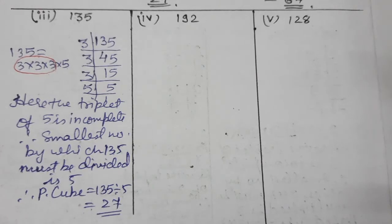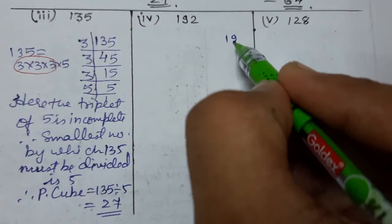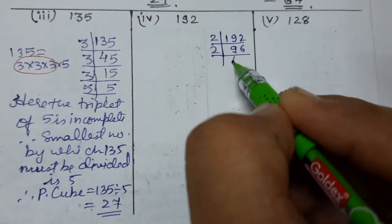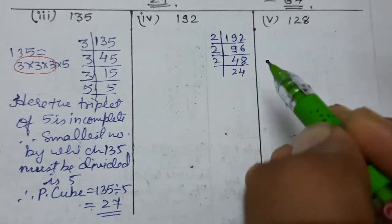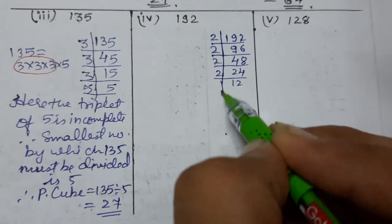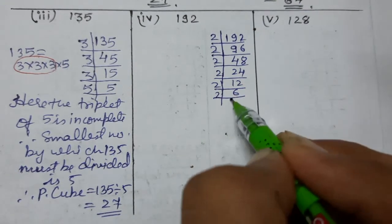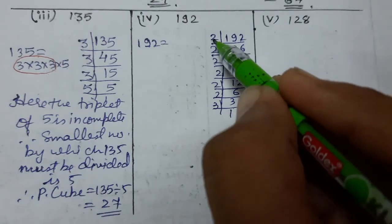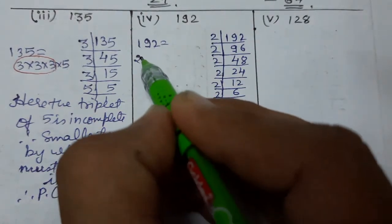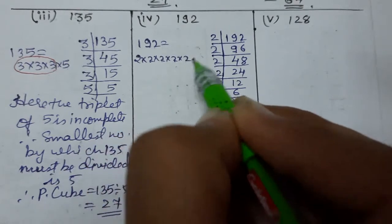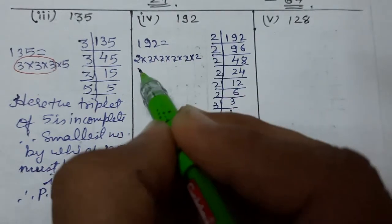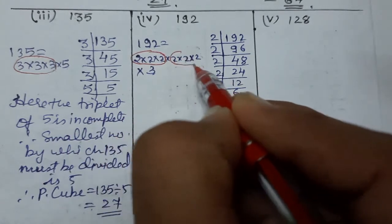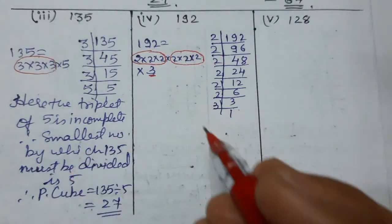Now we'll do the fourth part: 192. Again taking prime factors: 192 = 2 × 96, and continuing: 2 × 2 × 2 × 2 × 2 × 2 × 3. So 192 can be written as 2 six times and 3 once. Making groups of 3: this is one triplet of 2, this is another triplet of 2, and what is left is one 3.